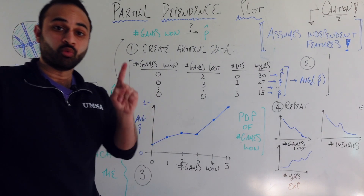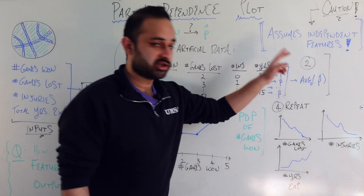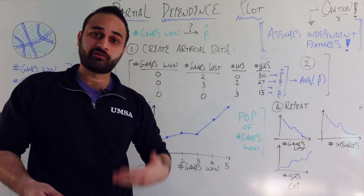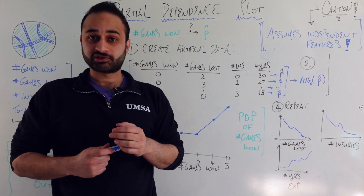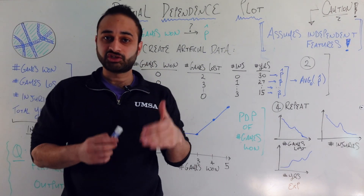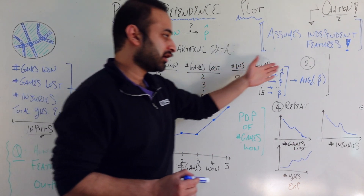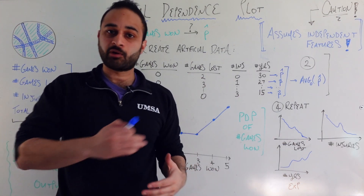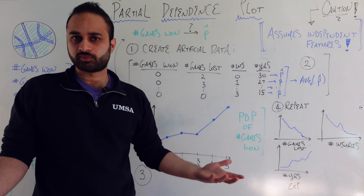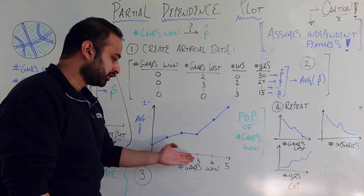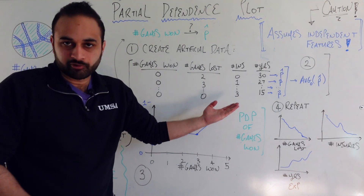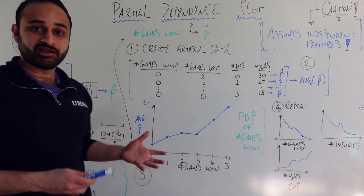You can probably see the next step: we then artificially set the entire column to one and calculate the average predicted probability, then set it to two, three, four, and five, getting the average predicted probability in each case. That's step two — tampering with the dataset by setting the whole column to each possible value and calculating the average predicted probability output by the model. Step three is creating the partial dependence plot: simply plot the number of games won (0 through 5) against the average predicted probability for each value.